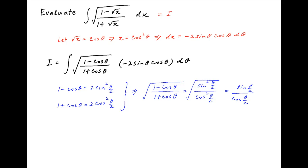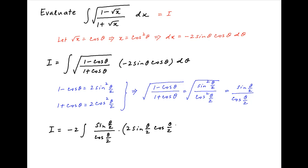Substituting this in the expression for I, we get I is equal to the integral of minus 2 times sin theta upon 2 divided by cos theta upon 2. Sin theta can be replaced with 2 sin theta upon 2 times cos theta upon 2, all of this multiplied by cos theta d theta. Cos theta upon 2 cancels, and the 2 sin theta upon 2 terms combine, resulting in sin squared theta upon 2.